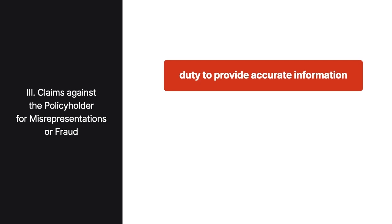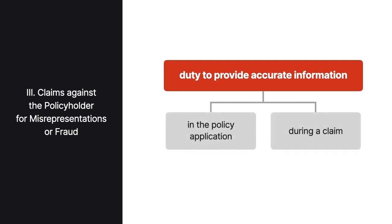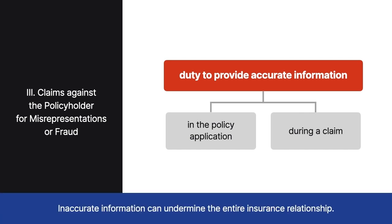A policyholder also has a duty to provide accurate information in both the policy application and during a claim. If the policyholder provides inaccurate information, even accidentally, the insurer might be misled into taking actions that it wouldn't have taken if it had accurate information, which undermines the entire insurance relationship.